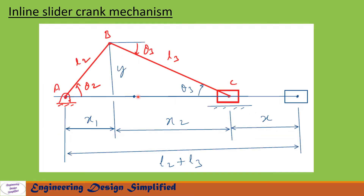When the crank and coupler links are inline, the slider will have its rightmost position — let us call that the zero position. As the crank rotates counterclockwise, the slider tends to move from right to left. We call this displacement X. X is the displacement of the slider when the crank rotates by angle theta2. At this position, the horizontal length of the crank is X1, the horizontal length of the coupler link is X2, the vertical length is Y, and the total length from A to the slider position is L2 plus L3.